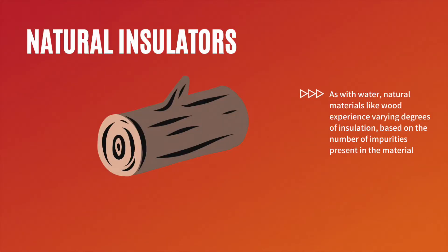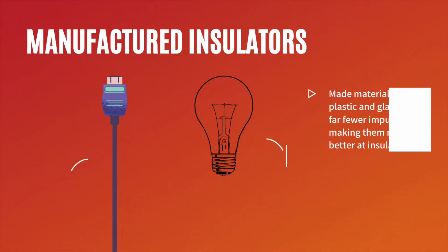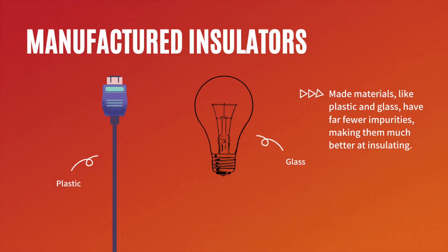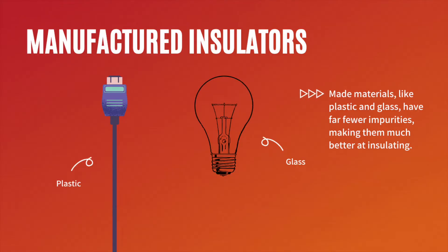As with water, natural materials like wood experience varying degrees of insulation based on the number of impurities present in the material. This makes things like wood less likely to be consistently good insulators. On the other hand, man-made materials like plastic and glass have far fewer impurities, making them far more insulative.